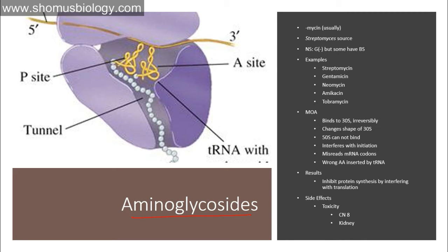An example of 30s inhibitors is the aminoglycosides, identified by the 'mycin' suffix, with Streptomyces as the source. Examples include streptomycin, gentamicin, neomycin, amikacin, and tobramycin. Whenever you see 'mycin' antibiotics, they are protein synthesis inhibitors — either 50s or 30s inhibitors. We have seen some mycin antibiotics as 50s inhibitors; aminoglycosides here are 30s inhibitors.